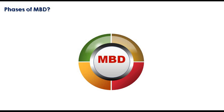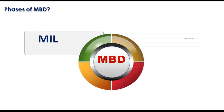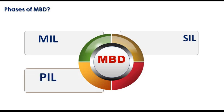Let us see what are the phases of model-based design technique. There are four different phases: MIL, that is Model In-Loop; SIL, Software In-Loop; PIL, Processor In-Loop; and HIL, Hardware In-Loop. Let us see what each of these are.